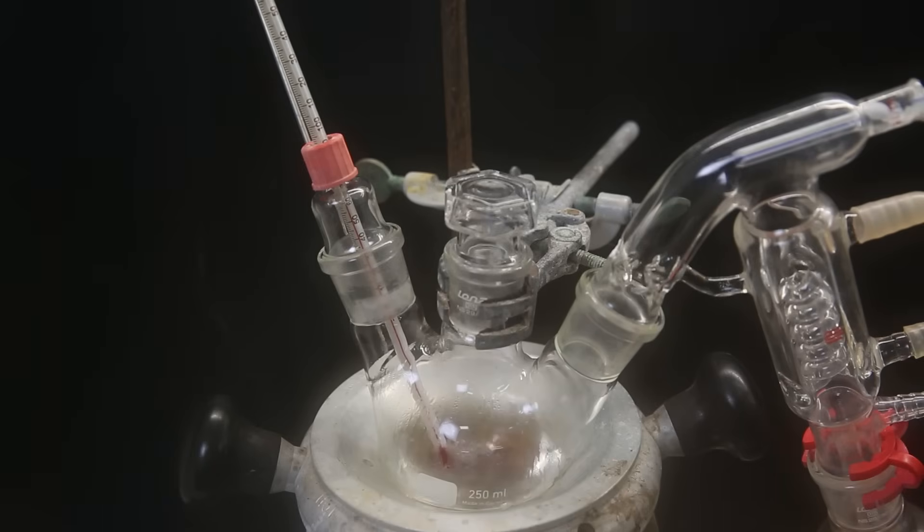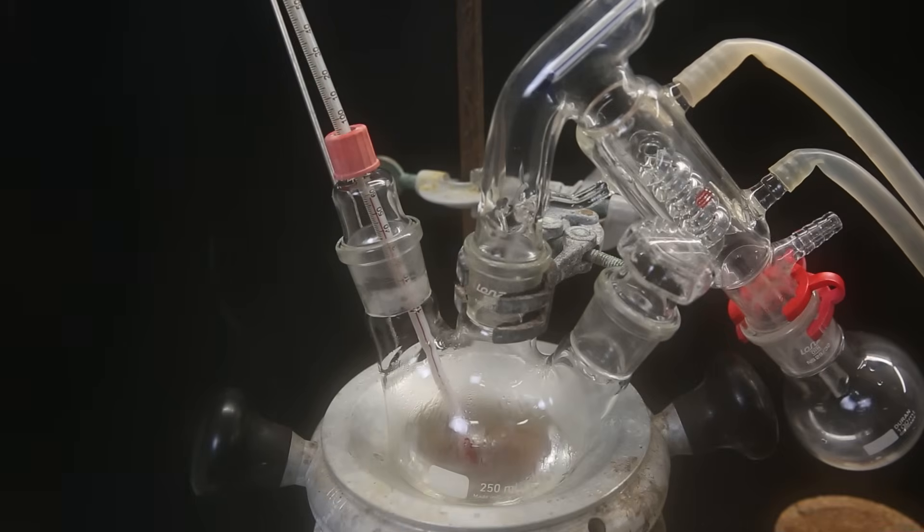When all of the 1,5-cyclooctadiene has been added, I remove the dropping funnel and replace it with a stopper. I then swap the position of the stopper and the short path distillation apparatus.